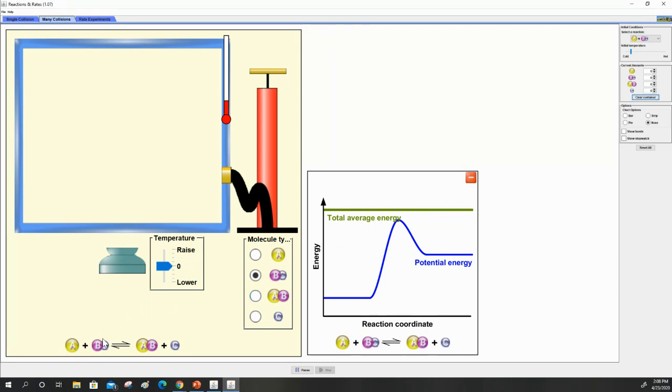And then I have my reactants here and my products here. So I'm going to put in reactant A, here we go, I'm going to put like five of them in there. And then I'm going to put in this other reactant BC, one, two, three, four, five.